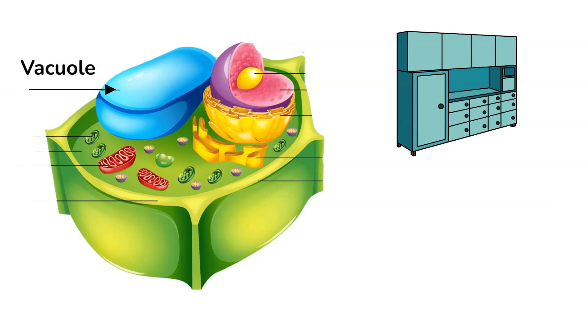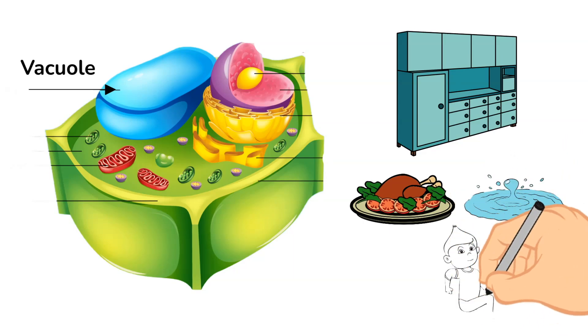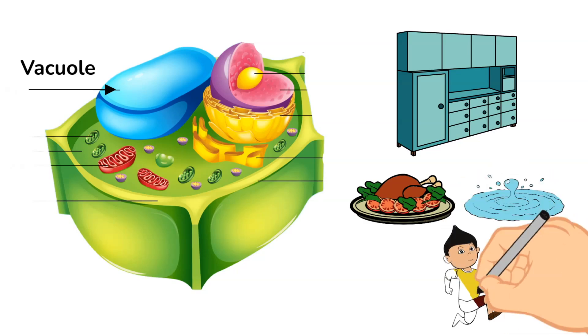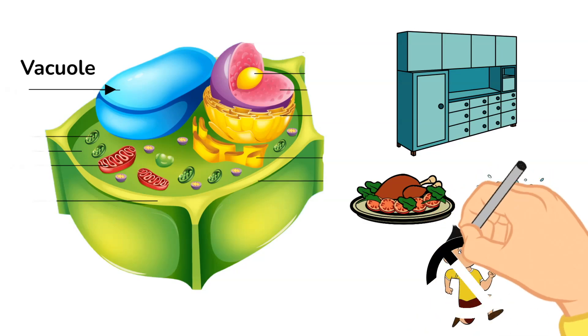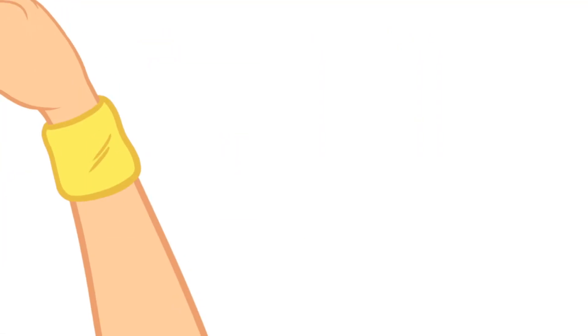So why is it so big? Well plant cells need to store food and water because they don't have the ability to move around and find food or water to consume. So they must have that large vacuole as a place to store these things so that when they get food and water, they can store it for times when they don't have enough.